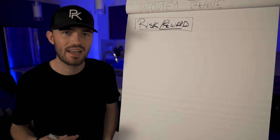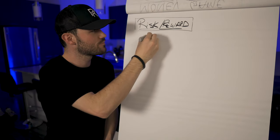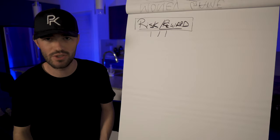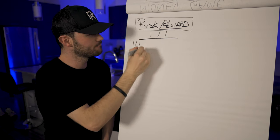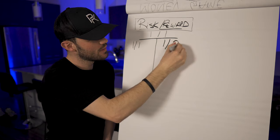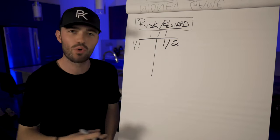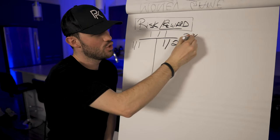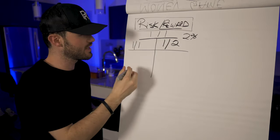Let's break that down. The average mentor will teach you that your risk-reward ratio needs to be one to one. In today's example, we'll compare a one-to-one and a one-to-two risk-reward ratio. We're going to assume we're smart traders risking two percent on every single trade in both scenarios.